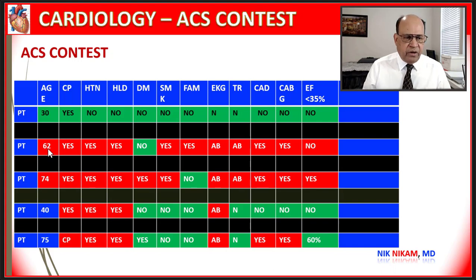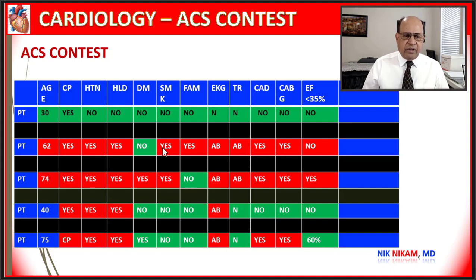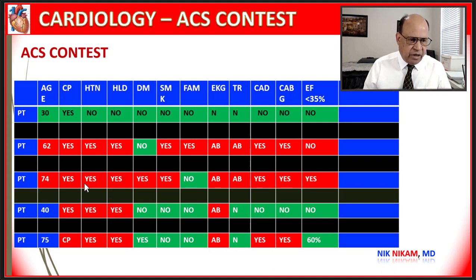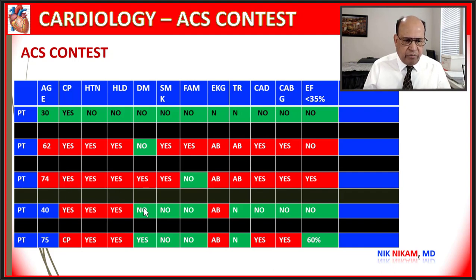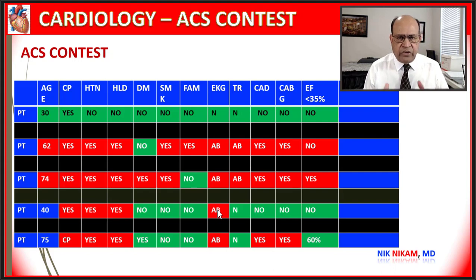A 62-year-old person with chest pain, hypertension, hyperlipidemia, abnormal EKG, abnormal troponin, and a history of bypass surgery — this is a high risk patient who needs to be approached in a different manner altogether. Then a 74-year-old with coronary artery disease, coronary artery bypass surgery, and low ejection fraction — this is a very high risk group patient. A 40-year-old with mild risk factors but otherwise normal findings except for abnormal T-wave changes falls in the intermediate risk group.